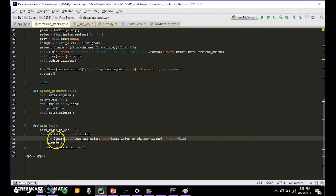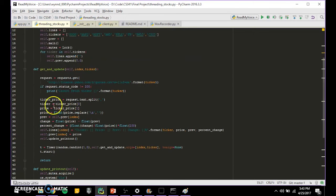and that getAndUpdate function is run, it gets the information from the stock, and then it itself queues up a new timer that runs itself again. And therefore that thread continually runs over and over and over again, and it starts its own thread.